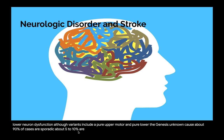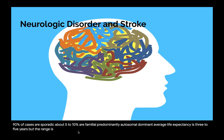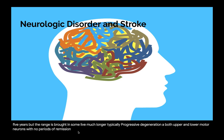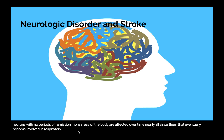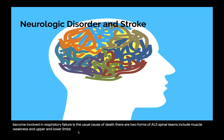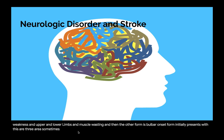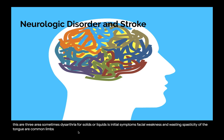About 90% of ALS cases are sporadic and about 5 to 10% are familial, predominantly autosomal dominant. Average life expectancy is 3 to 5 years, though the range is broad. Typically there is progressive degeneration of both upper and lower motor neurons with no periods of remission. There are two forms: the spinal form (about two-thirds of patients), with early symptoms of muscle weakness in upper and lower limbs; and the bulbar onset form, which initially presents with dysarthria, facial weakness, wasting, and spasticity of the tongue. Limb symptoms may develop simultaneously or later.